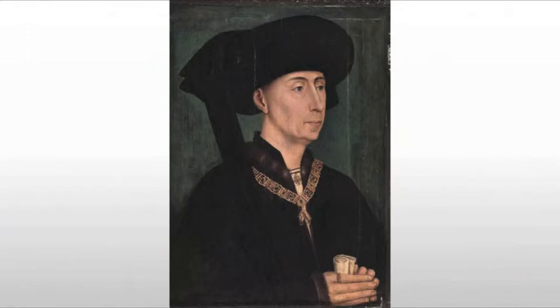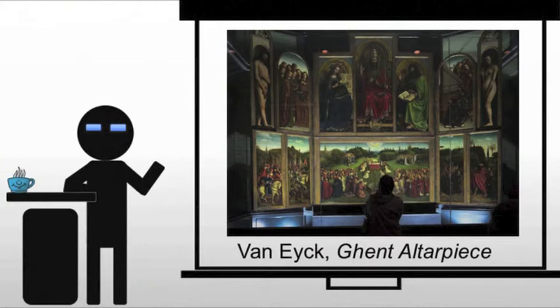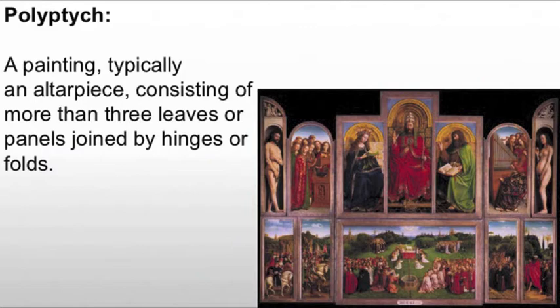The first piece we're looking at is the Ghent Altarpiece. This is a retable, or altarpiece, and it's one of the largest of the 15th century. It's made up of multiple panels, which makes it a polyptych — a painting, typically an altarpiece, consisting of more than three leaves or panels joined by hinges or folds.